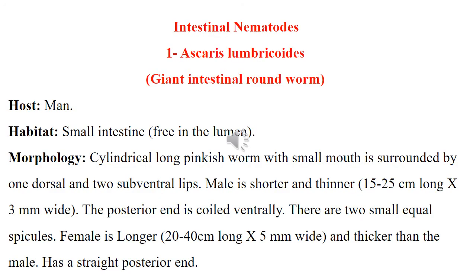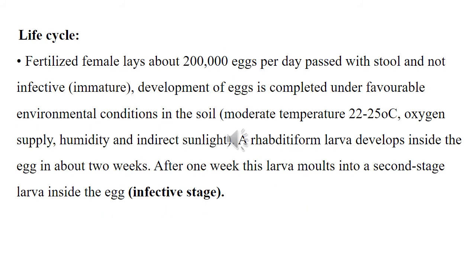Ascaris lumbricoides — the large or small roundworm. Habitat: small intestine, free in the lumen. Morphology: cylindrical, long, pinkish worm with a small mouth surrounded by one dorsal and two subventral lips. The male is shorter and thinner; the posterior end is coiled ventrally and there are two small spicules. The female is longer and thicker than the male with a straight posterior end. Life cycle: the large female lays about 200,000 eggs per day.